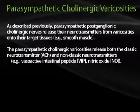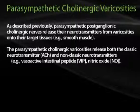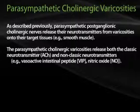Parasympathetic cholinergic varicosities. Parasympathetic postganglionic cholinergic nerves release their neurotransmitters from varicosities onto their target tissues, such as smooth muscle. The parasympathetic cholinergic varicosities release both classic neurotransmitters, such as acetylcholine, and non-classic neurotransmitters, for example vasoactive intestinal peptide (VIP) and nitric oxide.